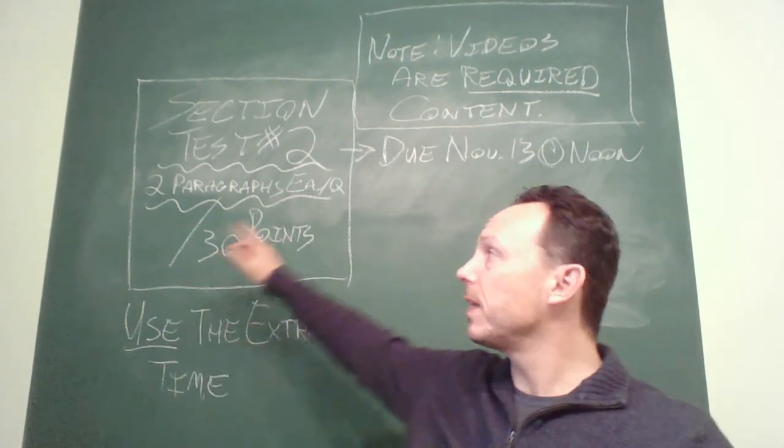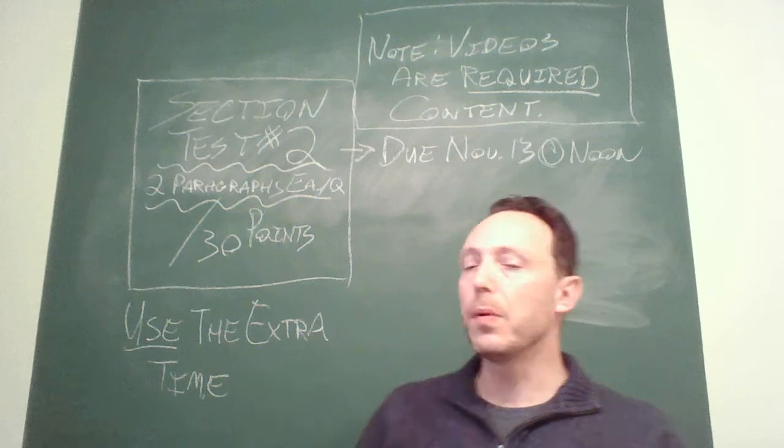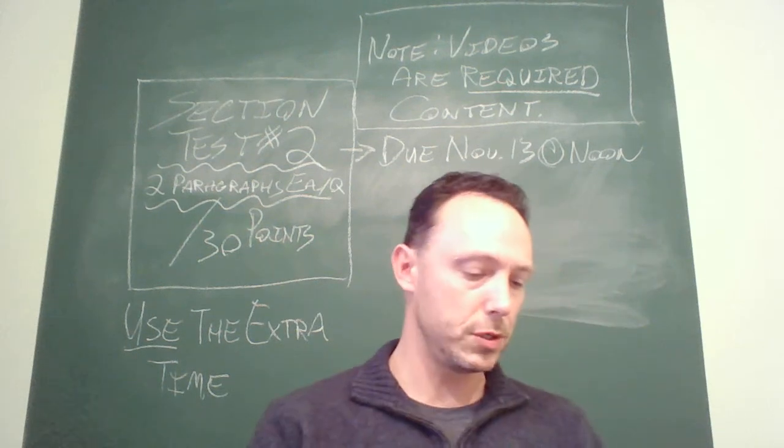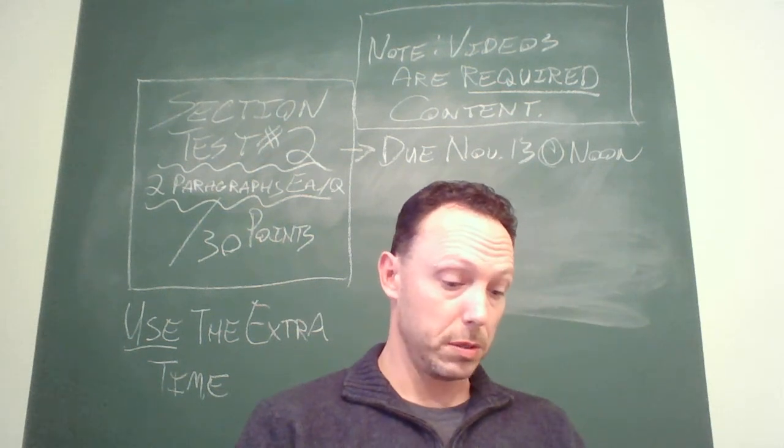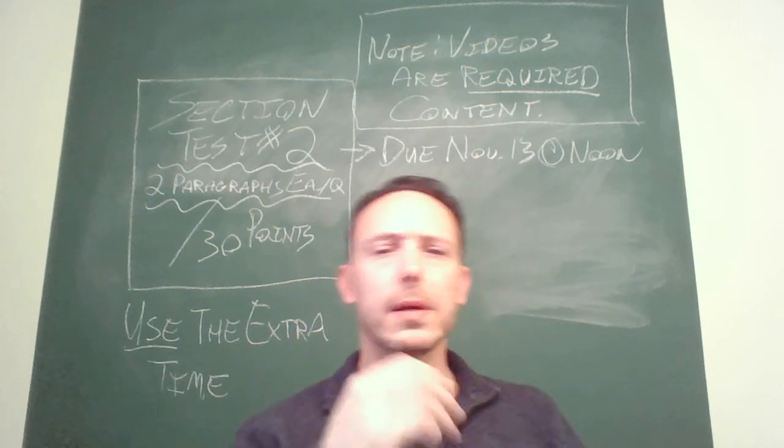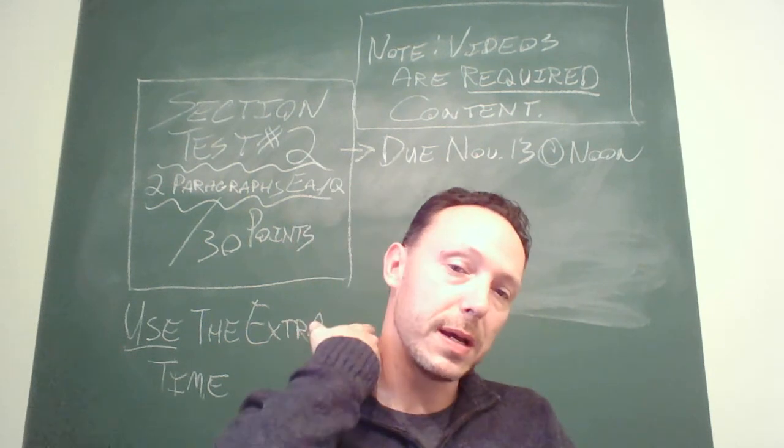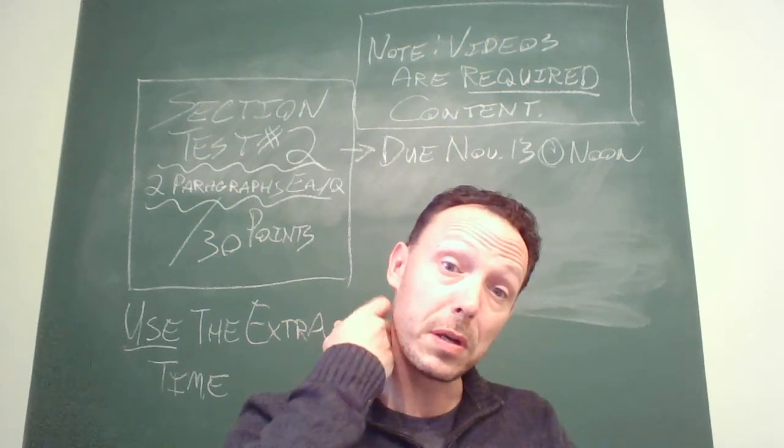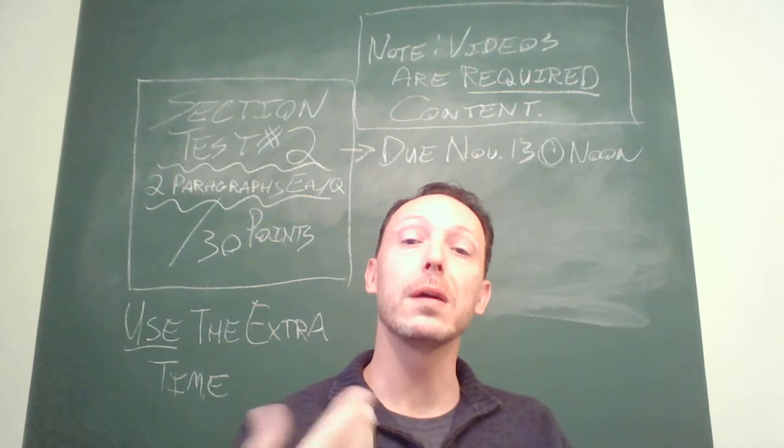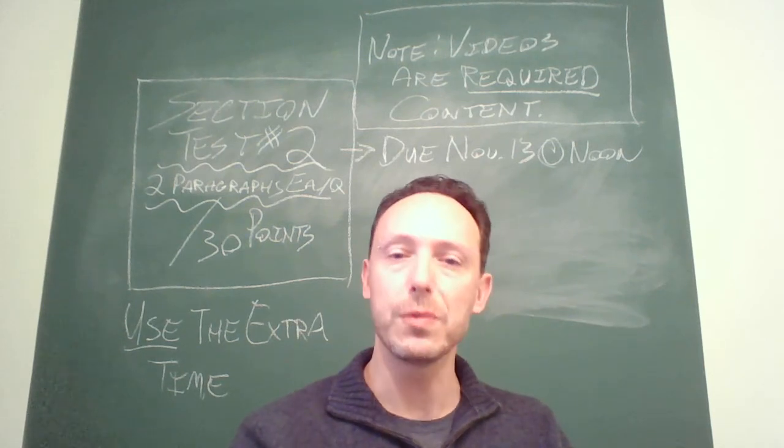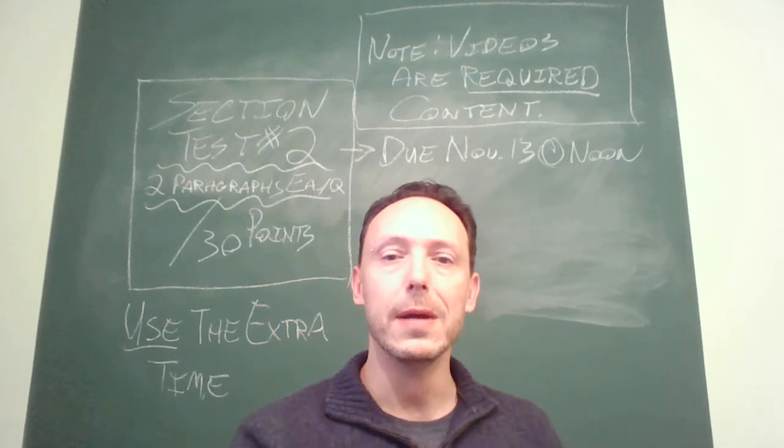So there are six questions, five points each for a total of 30 points. One more thing about the comments on your last assignment. I'm not trying to be a jerk. I'm trying to be therapeutic. I'm trying to get you to enhance your ability to argue.